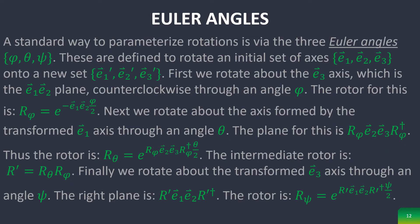Now for Euler angles, a standard way to parameterize rotations is via these three Euler angles φ, θ, and ψ. These are defined to rotate an initial set of axes E1, E2, and E3 onto a new set. First we rotate about the E3 axis, which is the E1, E2 plane counterclockwise through an angle φ. The rotor for this is given by R sub φ. Next we rotate about the axis formed by the transformed E1 axis through an angle θ. The plane is given here thus the rotor is R sub θ.